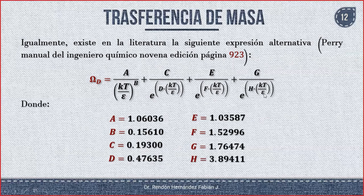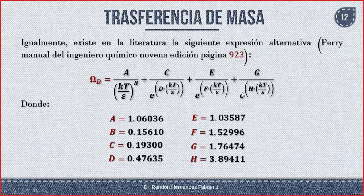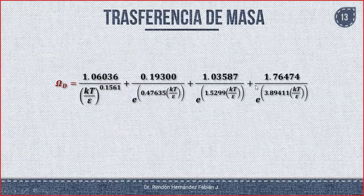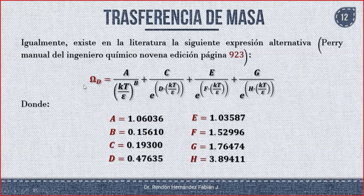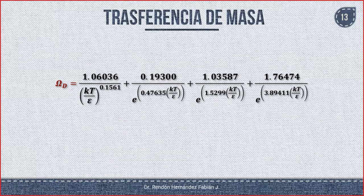Primero hay que calcular el valor de KT/ε_AB, luego colocarlo en la expresión. Se sustituye en cada término, se hacen las sumas correspondientes y listo, problema resuelto. Lo que yo hago es sustituir de una vez los valores de las constantes y anotarlo en el formulario de esta manera simplificada, para no estar pensando cuánto vale cada constante.